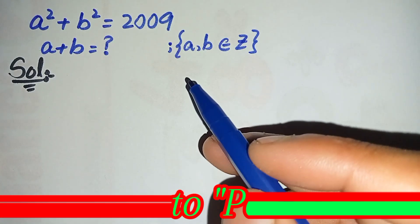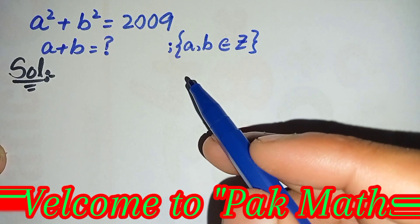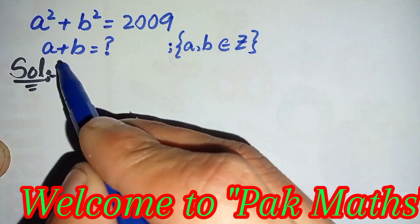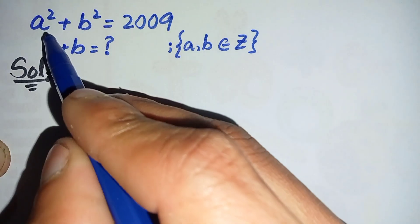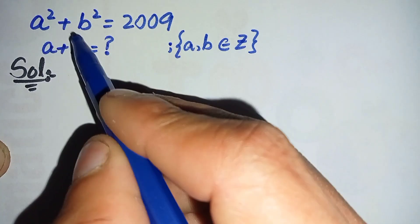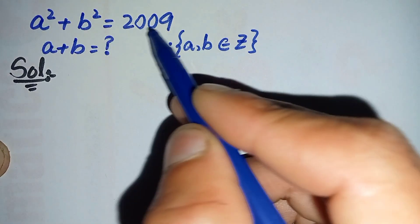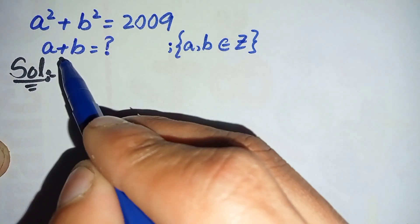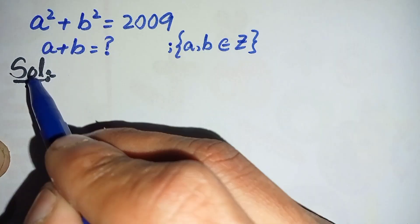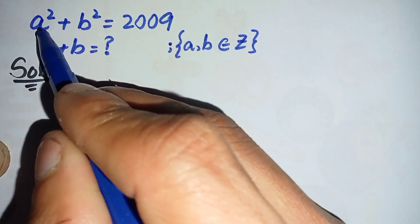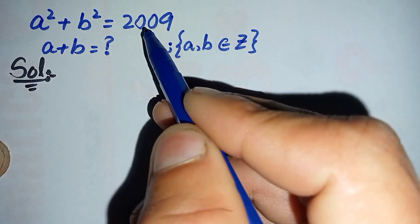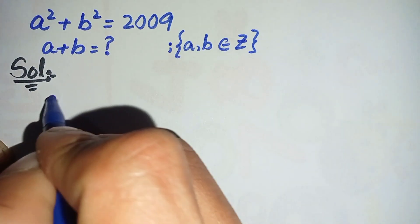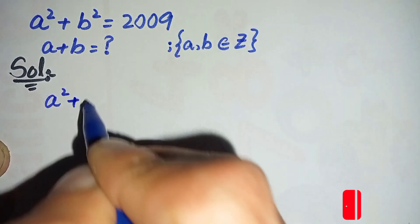Hi everyone, welcome to Parkmas. In this video I am going to find the value of a plus b, where a squared plus b squared is equal to 2009. To find the value of a plus b, we will write the solution and then the given equation: a squared plus b squared is equal to 2009.